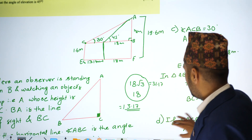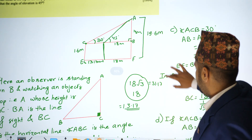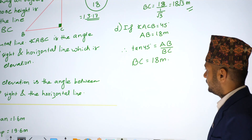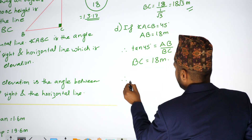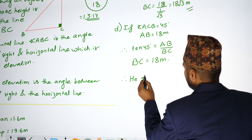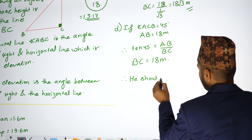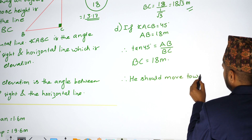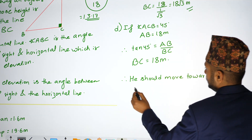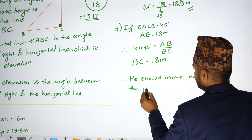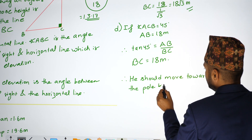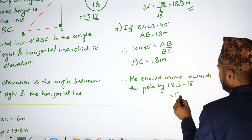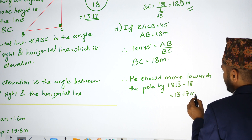Therefore, he should move towards the pole by 18√3 minus 18, which equals approximately 13.17 meters.